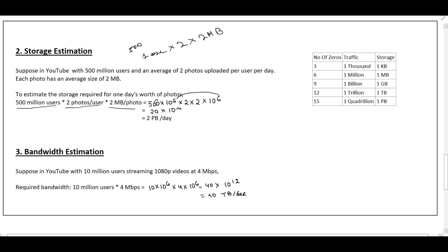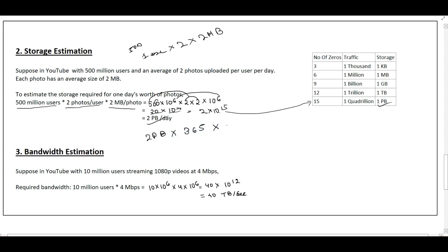Combining all the zeros: 6 and 6 gives 12, then 13, then 14 — so 10^14. Computing the numeric part: 2 × 2 is 4, and 4 × 5 is 20, so we have 20 × 10^14, which becomes 2 × 10^15. From the table, 10^15 in storage is one petabyte — so this is 2 petabytes of storage needed for one day. To calculate for one year, multiply by 365, and for five years, multiply by 5, giving the five-year storage requirement.